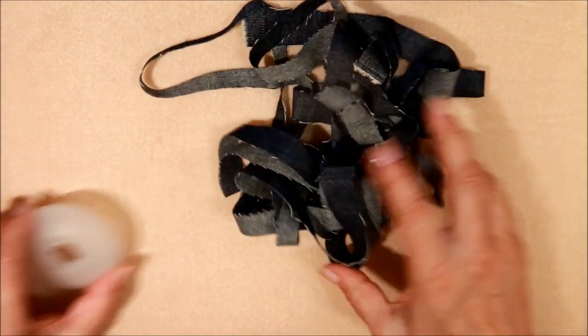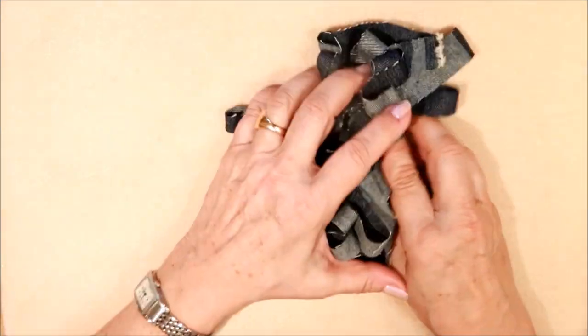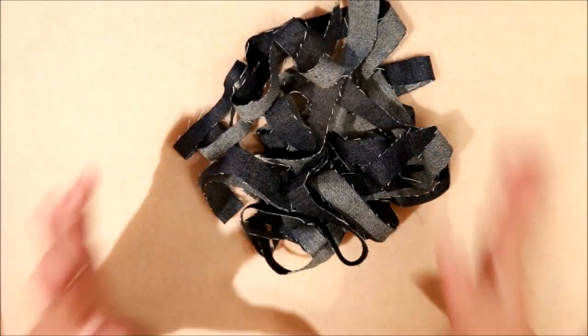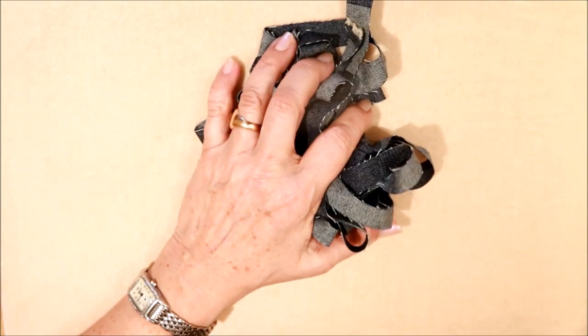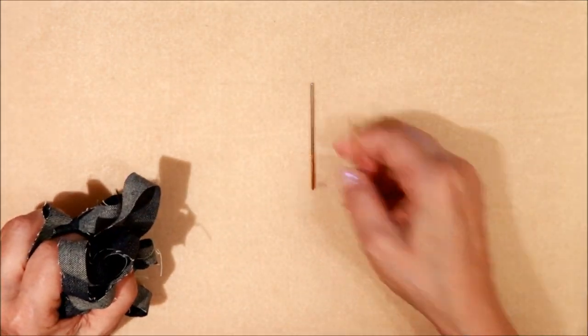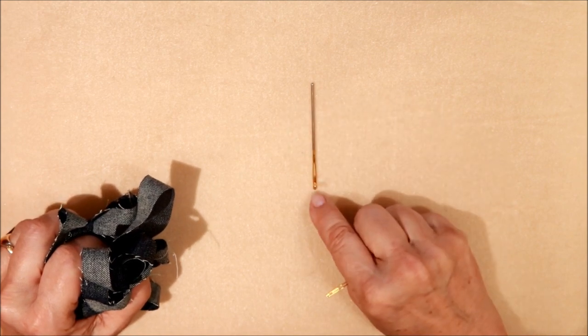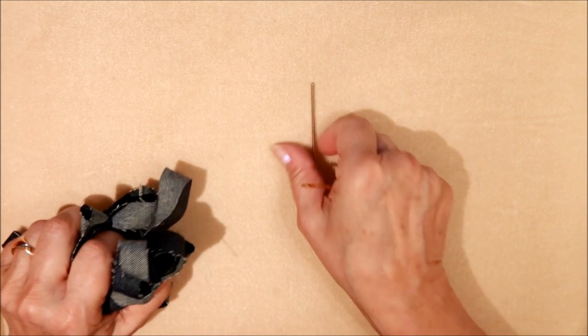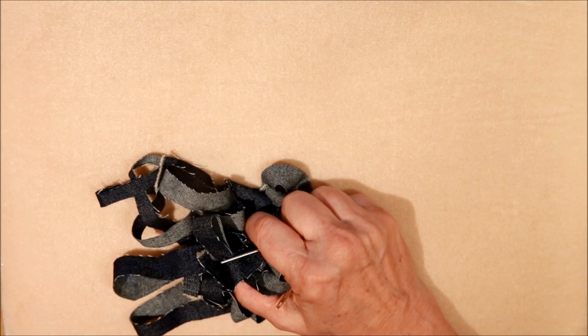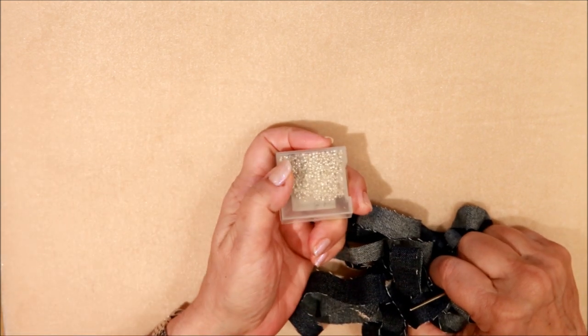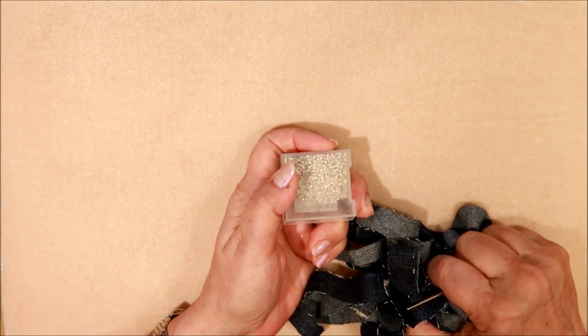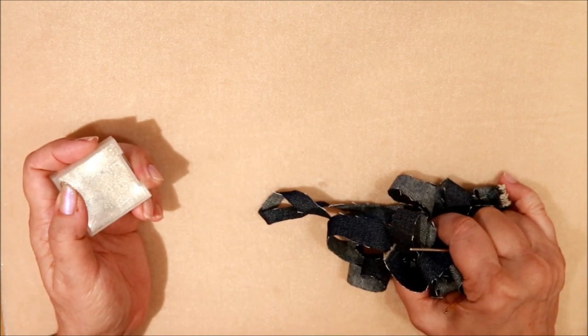Some denim strips from your old jeans, preferably with the button left on, I don't happen to have any with the button left on, I've been using them all up recently, and a two-hold bodkin, I like to use the one that Prim makes, and finally some little wee crimps to put together your wire with, that is what you will require.